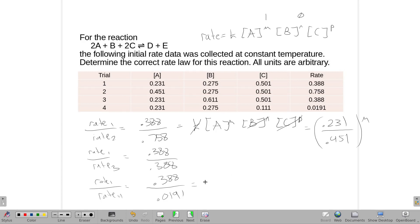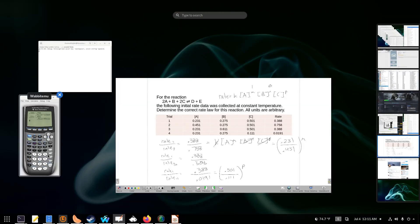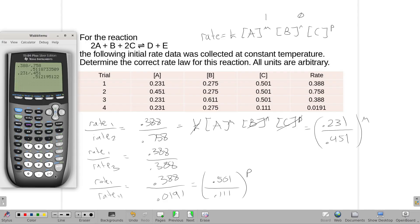All these are held constant. The only thing that changes, this is 0.501, and this is 0.111, and we are going to solve for whatever P is. So I have 0.388 divided by 0.0191 gives me 20, and 0.501 divided by 0.111 is about 5.